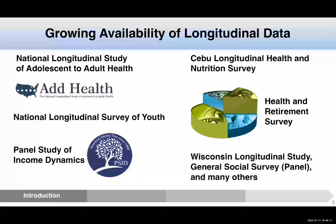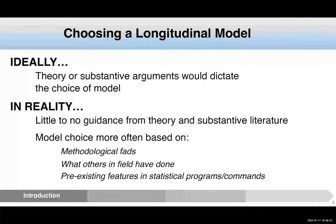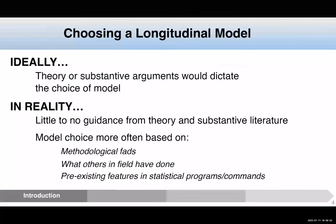This raises the question of how should we analyze it — what type of model should we use for studying the outcome of interest? I know what people will say: just do what theory tells you to do, use the model suggested by theory or substantive consideration. And I fully agree with that. But the problem is, theory is rarely that specific to say use this model — this is the pattern of change you're going to observe.